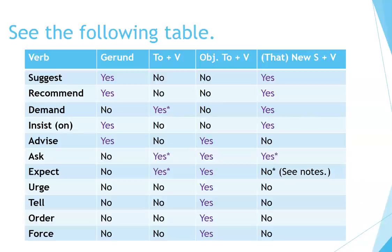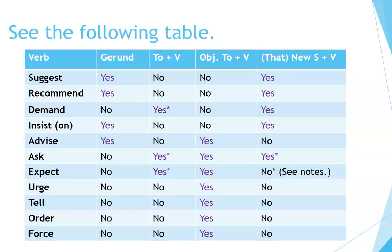See the following table comparing verbs by their allowed structures — gerund, to + verb, object + to + verb, and that + new subject and verb. Suggest: gerund yes, to+verb no, object+to+verb no, that-clause yes. Recommend: gerund yes, to+verb no, object+to+verb no, that-clause yes. Demand: gerund no, to+verb yes, object+to+verb no, that-clause yes. Insist/insist on: gerund yes, to+verb no, object+to+verb no, that-clause yes. Advise: gerund yes, to+verb no, object+to+verb yes, that-clause no. Ask: gerund no, to+verb yes, object+to+verb yes, that-clause yes.